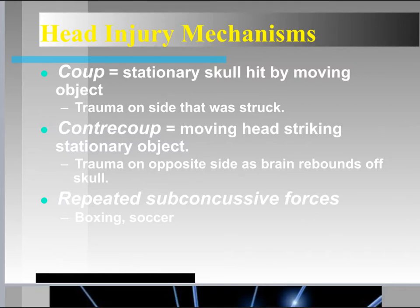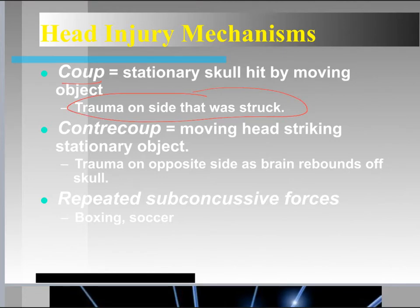There are two different traumas that can happen. A coup injury occurs when a stationary skull is hit by a moving object, and the trauma to the brain is most often on the side that was struck. For example, standing still and being hit by a baseball bat — the injury is on the side that was struck.